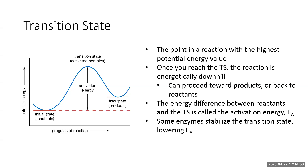On a simple graph of reaction progress, the x-axis is the reaction coordinate and the y-axis is energy. Once you reach the transition state, the reaction is energetically downhill and can either proceed toward products or back to reactants. Think of it like a bucket of water: the harder you shake it, the more water gets up the hill, and once it's high enough it just flows down into products.